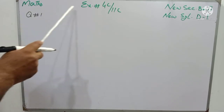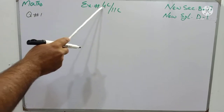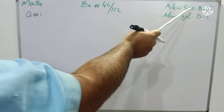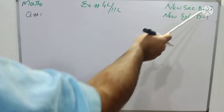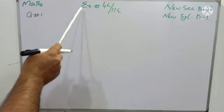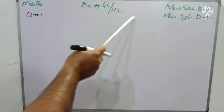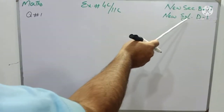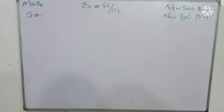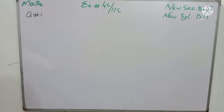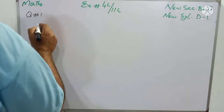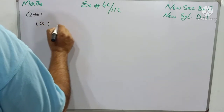Dear students, Mathematics Exercise 4C for New Syllabus Mathematics Book 2, Class 7 students, and Exercise 11C for New Syllabus Mathematics D1 for E-Level O-Level. Question No. 1 of this exercise is: find the sum of the interior angles of each of the following polygons. Part A is an 11-gon.